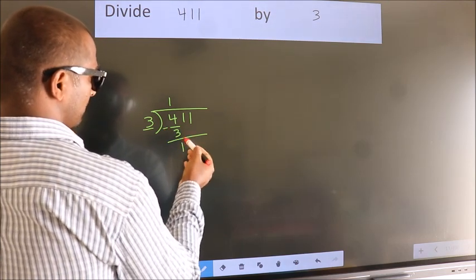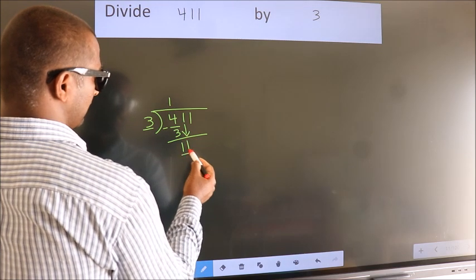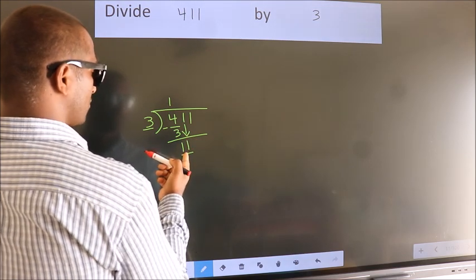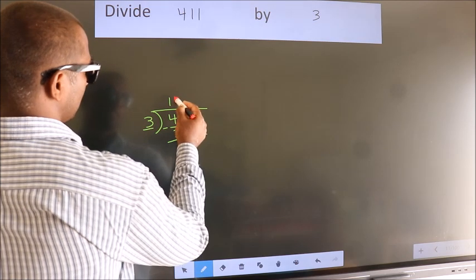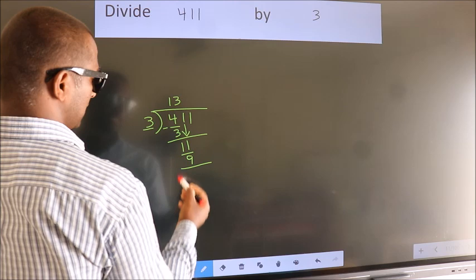After this, bring down the beside number. So, 1 down. So, 11. A number close to 11 in 3 table is 3 threes 9. Now, we subtract.